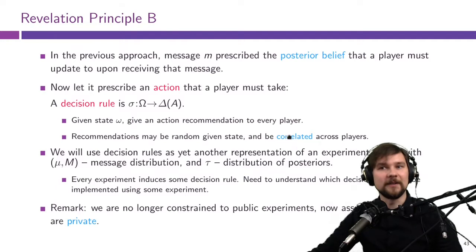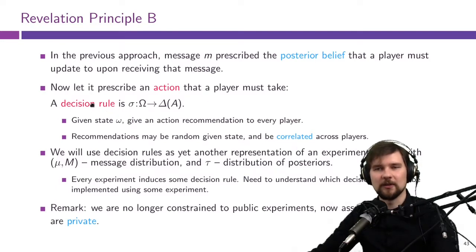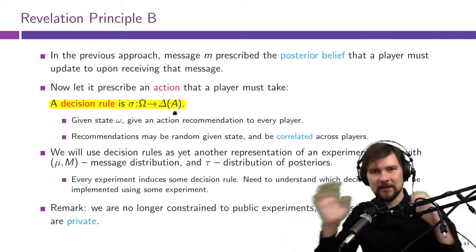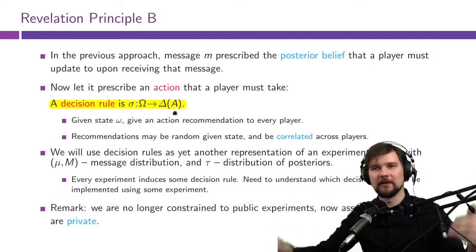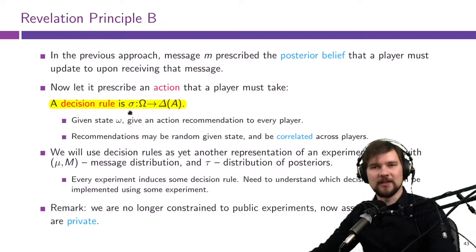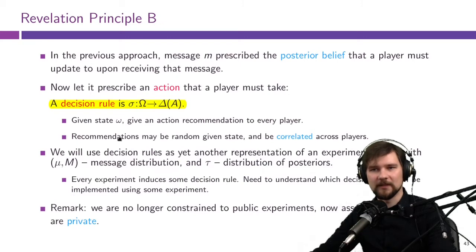This is the idea behind this second revelation principle. We introduce an object called a decision rule, given by σ, which maps states into distributions over action profiles. An action profile is a vector of actions for every player, and we may mix over those in every state. The realization of this decision rule will be an action recommendation to every player — these recommendations may be random given states, but they can also be correlated across players.